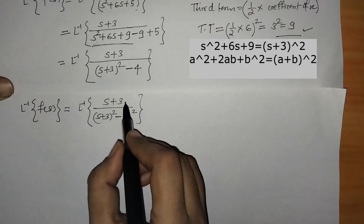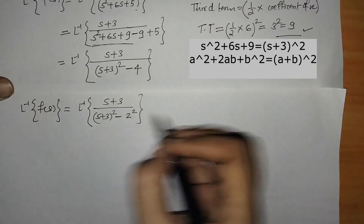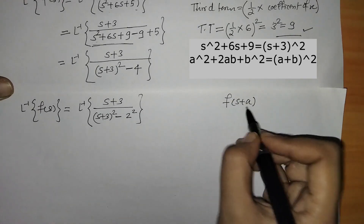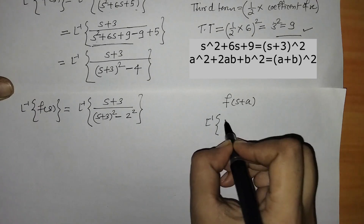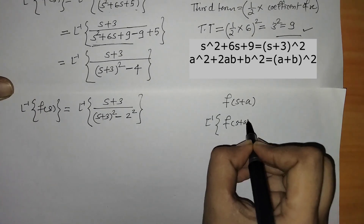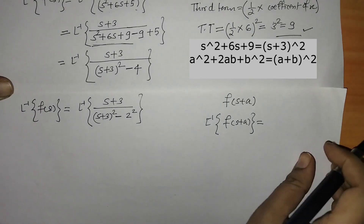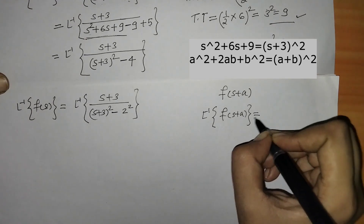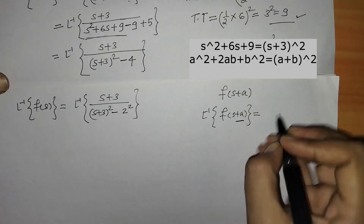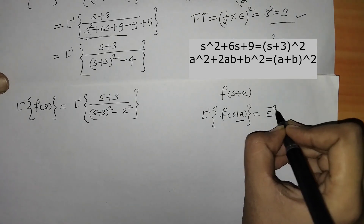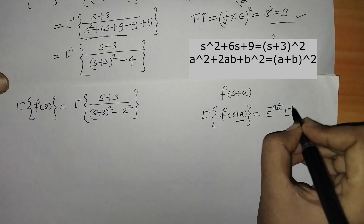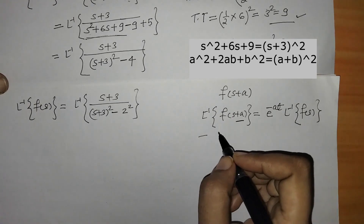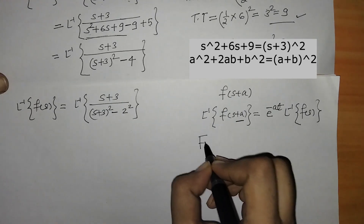Now we can check that here we have this function is of the type f(s + a). We know that when we have to find L inverse of f(s + a), we can find this by using the first shifting property of L inverse: we take e^{−at} outside and write L inverse of f(s). This is the first shifting property of inverse Laplace transform.